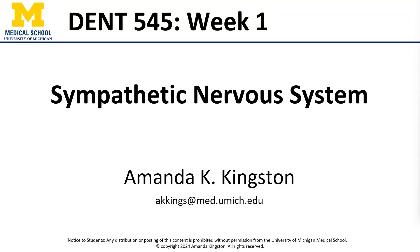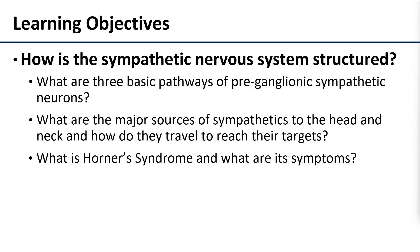Hi, this is Dr. Kingston and in this video we're going to talk about the sympathetic nervous system. We are primarily going to be talking about how the sympathetic nervous system is structured, the three basic pathways preganglionics can take, the major sources of sympathetics to the head and neck and how they travel to reach where they're going, and we'll briefly talk about Horner's syndrome, its symptoms, and how it relates to sympathetic innervation.